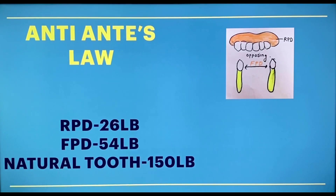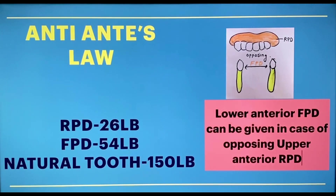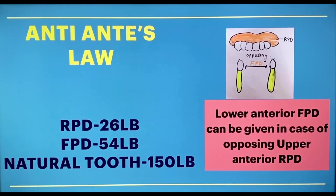Now we will see what is meant by Anti-Ante's law. In Anti-Ante's law, we consider the anterior region, where there are less forces since anterior teeth are not used for mastication. For example, if in the opposing arch there is a removable partial denture, we can give a fixed partial denture in the lower arch supported by only two canines, because the forces from the RPD are very less — above 26 lb — and canines have long, strong roots which support the assembly. This is an example of Anti-Ante's law, and it is only in such cases that we can oppose Ante's law.